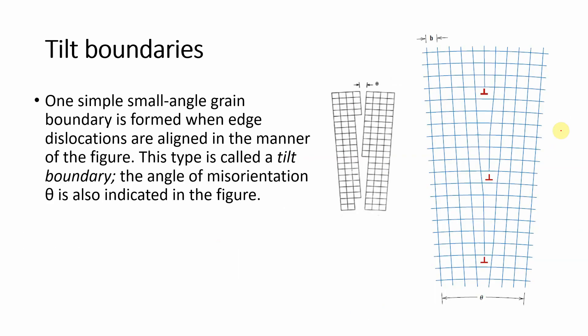Another type of grain boundary is the tilt boundary. One simple small-angle grain boundary is formed when edge dislocations are aligned as shown in the figure. If two grains meet with a tilting between them forming a small angle theta — the angle of misorientation — this type of boundary is called a tilt boundary.